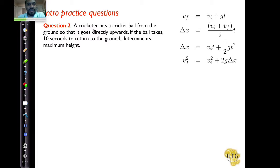There are a few important keywords here. The cricketer hits a cricket ball from the ground, so it goes from the ground and then it comes back to the ground. So we've just read the question now. It goes from the ground directly upwards and then it comes back to the ground. What case is that?